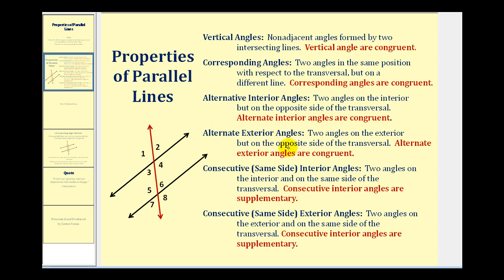Next, we have the alternate exterior angles — two angles on the exterior, but on the opposite side of the transversal. So, angle one and angle eight are alternate exterior angles, which are congruent, as well as angle two and angle seven. And for the last two, we have consecutive interior angles, or same side interior angles. These are two angles on the interior and on the same side of the transversal, and these angles are supplementary.